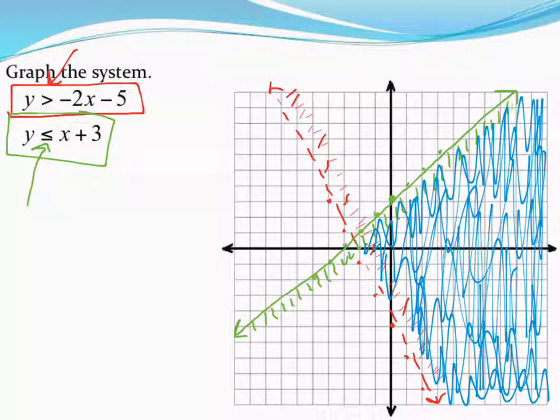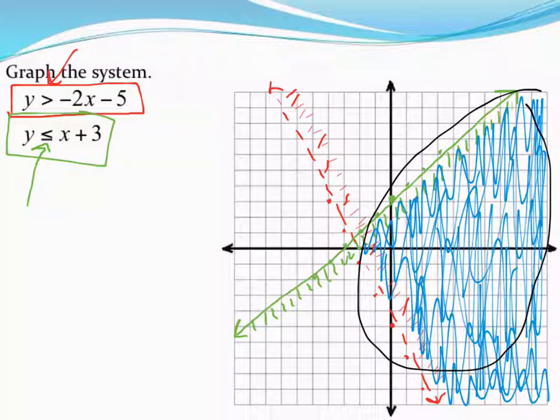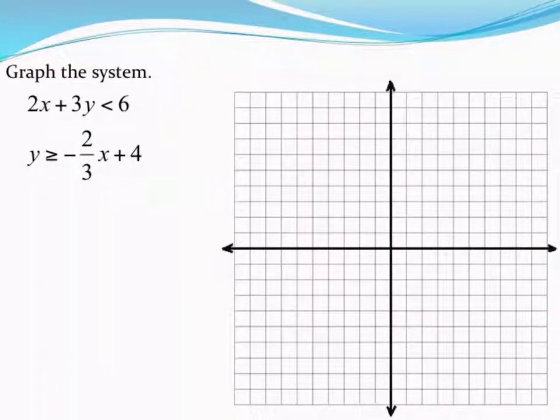Now very darkly shade in that section. Make that really obvious. Sometimes people just scribble these and I can't tell where their answers are. Shade that entire section very dark. Any point we pick in that shaded section would work in both inequalities at the same time. The picture is my answer. I don't get a single number for an answer. If you're not sure if I'm going to know where your answer is, make sure it's very obvious where your colors have blended and where your answer is going to be.